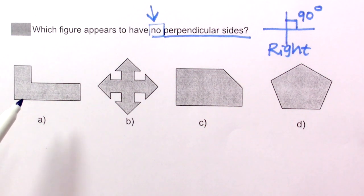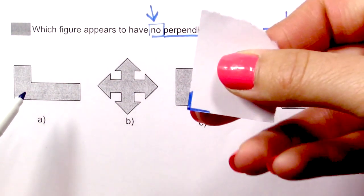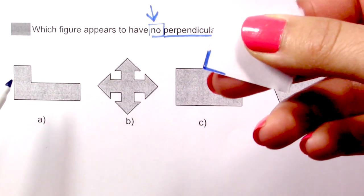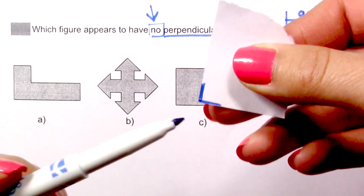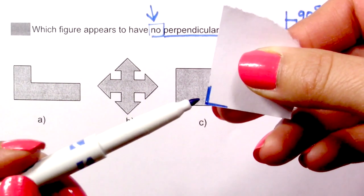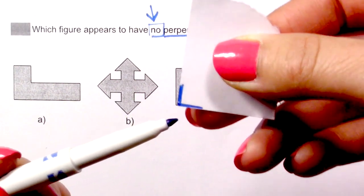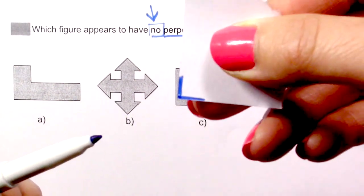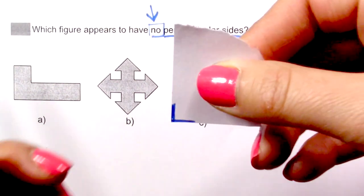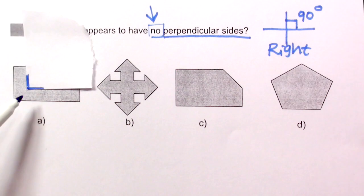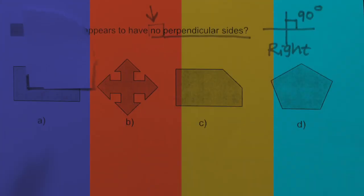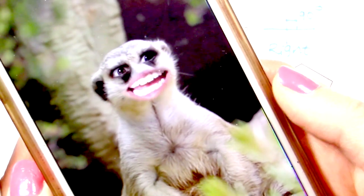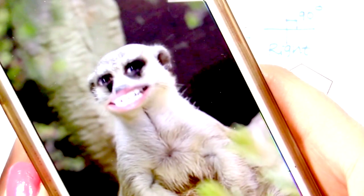Let me show you a very cool trick. With a little piece of paper, you get the corner and — voila — you have a 90-degree angle. We need this paper to label the angles on each shape.